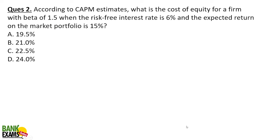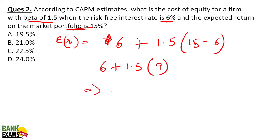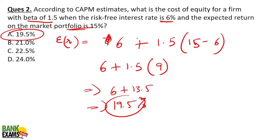Let's do the next question. Cost of equity of a firm: beta is 1.5, risk-free rate of interest is 6%, and expected return on the market portfolio is 15%. We need to find the cost of equity. Using the formula: 6% + 1.5 × (15% − 6%) = 6% + 1.5 × 9% = 6% + 13.5% = 19.5%. That is your answer. Very easy question, not very complicated.